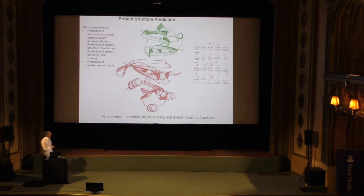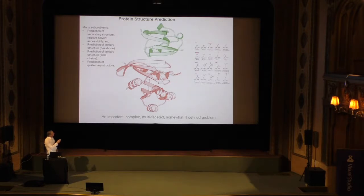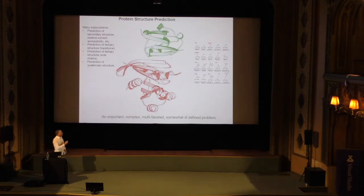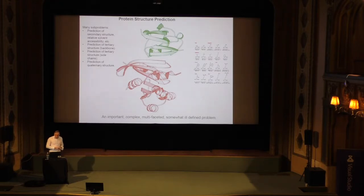You want to predict the structure of these very large molecules with thousands of atoms. There are many sub-problems. One is to predict secondary structure — the location of alpha helices and beta strands with hydrogen bonding between them, and regions in between called coils. Then you want to go to 3D structure — predicting the x, y, z coordinates of atoms on the backbone. You can go further to a full 3D model predicting side-chain atoms, and even quaternary structure where two protein chains combine into a complex.